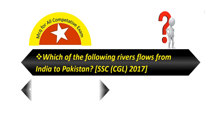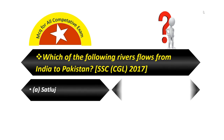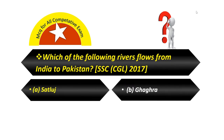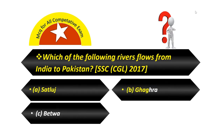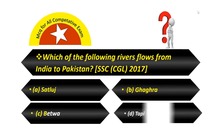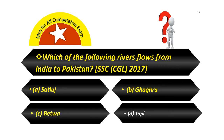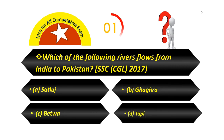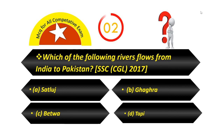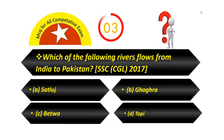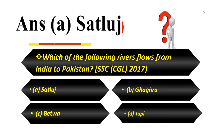Which of the following rivers flows from India to Pakistan? Option A — Sutlej. Option B — Ghaghra. Option C — Betwa. Option D — Tapi. Answer is Sutlej.